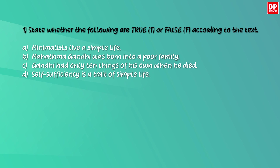Let's look at the questions that follow. Question number one: state whether the following are true or false according to the text. 'Minimalists live a simple life' — that's true. 'Mahatma Gandhi was born into a poor family' — this is false; we are told he was born into an affluent family. 'Gandhi had only ten things of his own when he died' — this is tricky, because the text says he had less than ten personal possessions, so it's false. 'Self-sufficiency is a trait of simple life' — this is true.